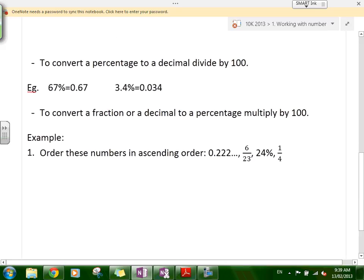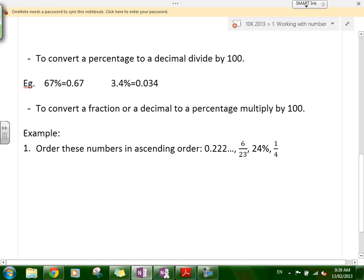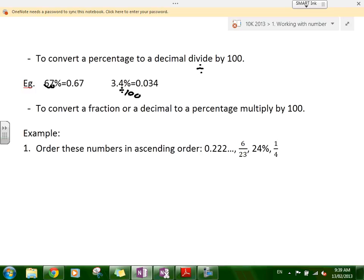So to convert a percentage to a decimal, you divide by 100. So 67% - if I divide it by 100, you move to the left two spots, 1, 2, becomes 0.67. 3.4% - if I move two spots to the left, divide it by 100, that's 0.034. Eventually, you get to the stage where you just shift it across. So it becomes very quick.